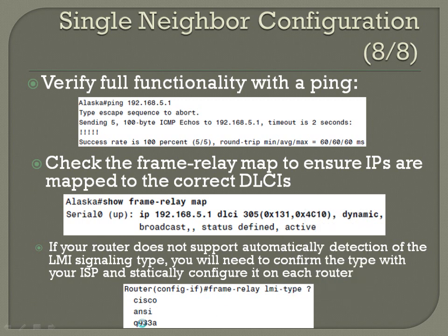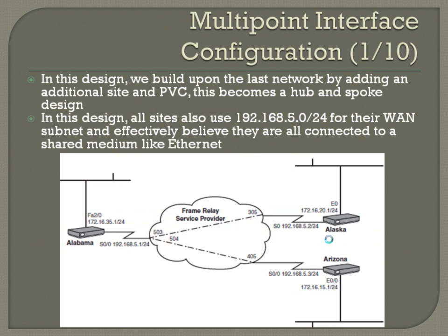That covers single neighbor configuration — a simple scenario with just one router on each side. Multipoint interface configuration adds another router into the mix, giving you a second PVC and DLCI going to a main hub router. This creates a hub-and-spoke design. In this design, all sites use the 192.168.5.0/24 block for their WAN subnets, so they effectively believe they are all connected to a shared medium like Ethernet.